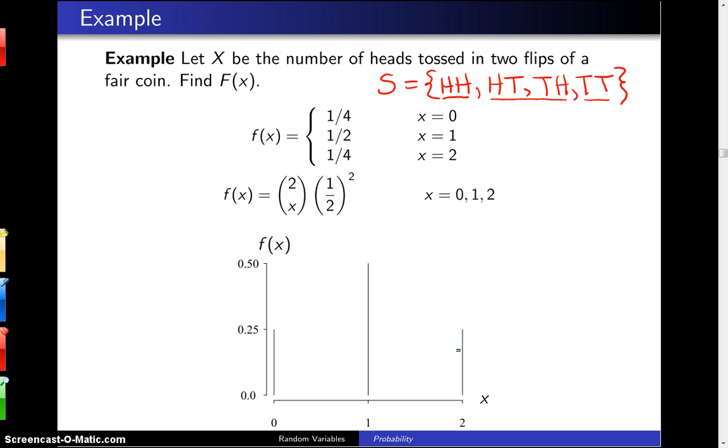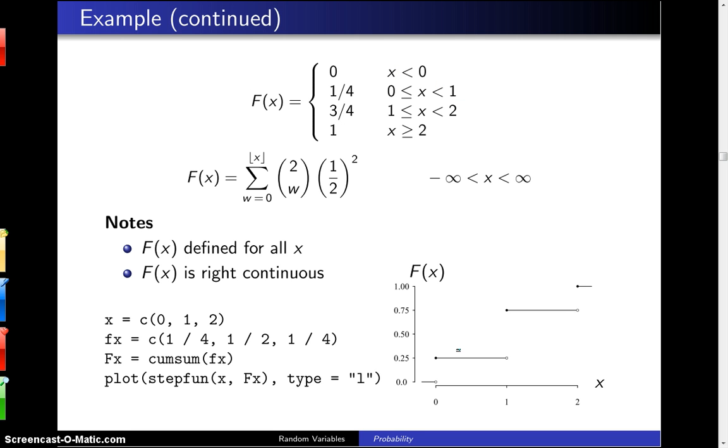Now on the next page, when you want the cumulative distribution function, you can see that capital F of X is going to be 0 for X less than 0. It will jump up by 1 fourth and stay there between 0 and 1. And then it will accumulate another 1 half here and take it up to 3 fourths between 1 and 2. And then finally it will jump up another 1 fourth for X greater than or equal to 2.